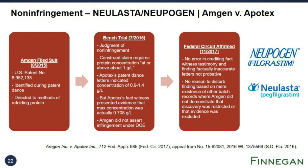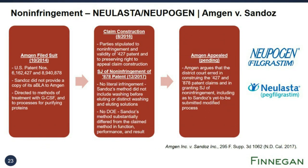The next non-infringement decision is from 2017 and is currently on appeal. After Sandoz filed ABLAs for Nupagen and Nulasta biosimilars but did not provide copies of its applications to Amgen, Amgen sued for patent infringement anyway. The parties stipulated to validity and non-infringement of one patent after claim construction, reserving the right to appeal that order. For the other patent, the Northern District of California granted summary judgment of non-infringement, finding that Sandoz's method did not include distinct washing and eluting as required by the claims, and also finding no infringement under the doctrine of equivalence. Amgen has appealed both the summary judgment and the claim construction order.